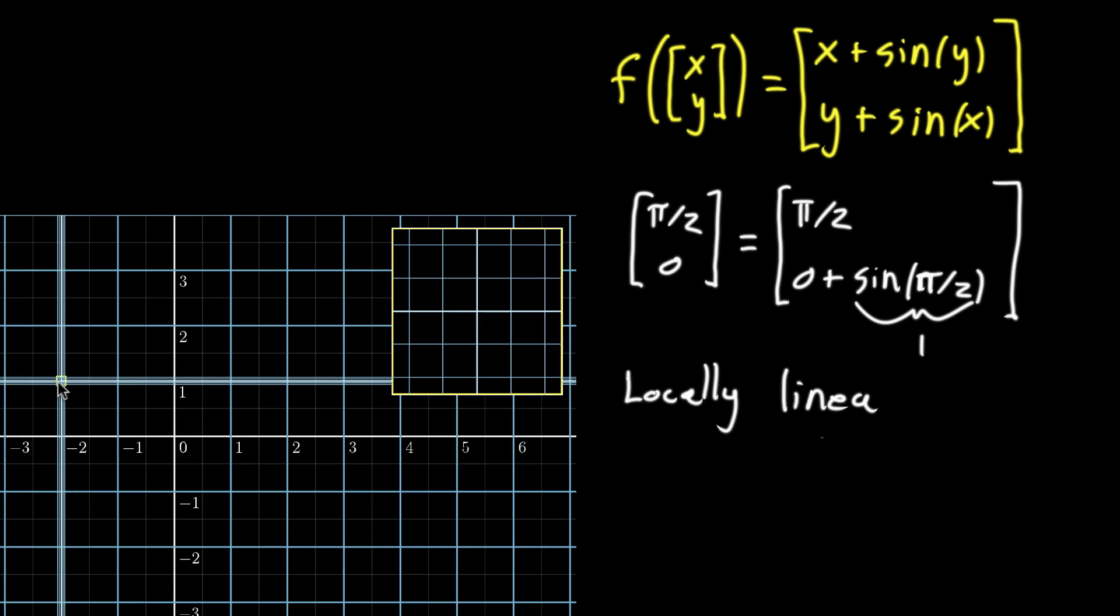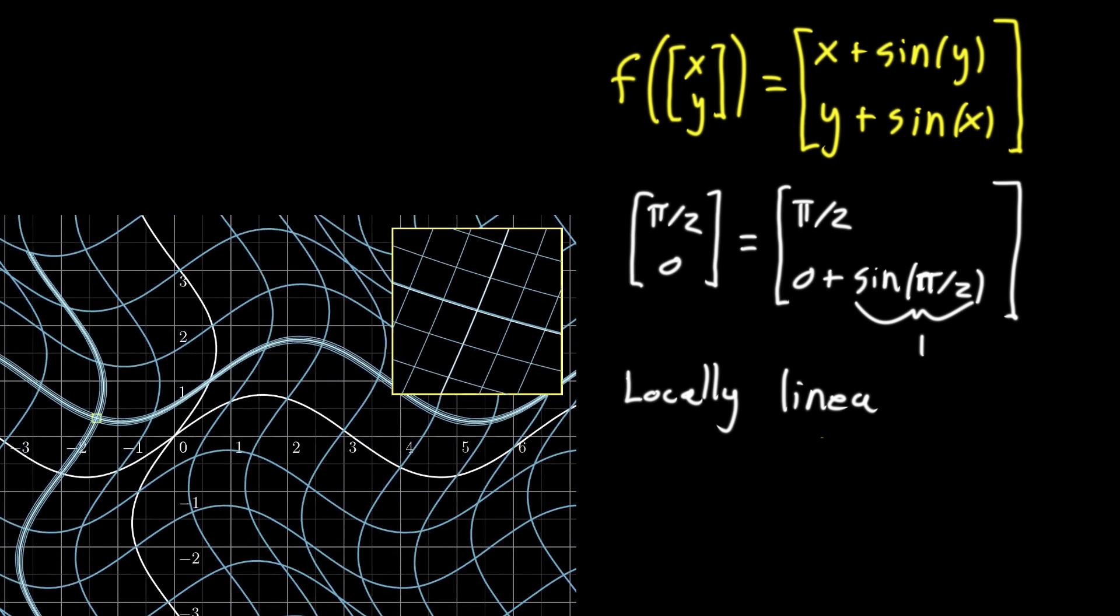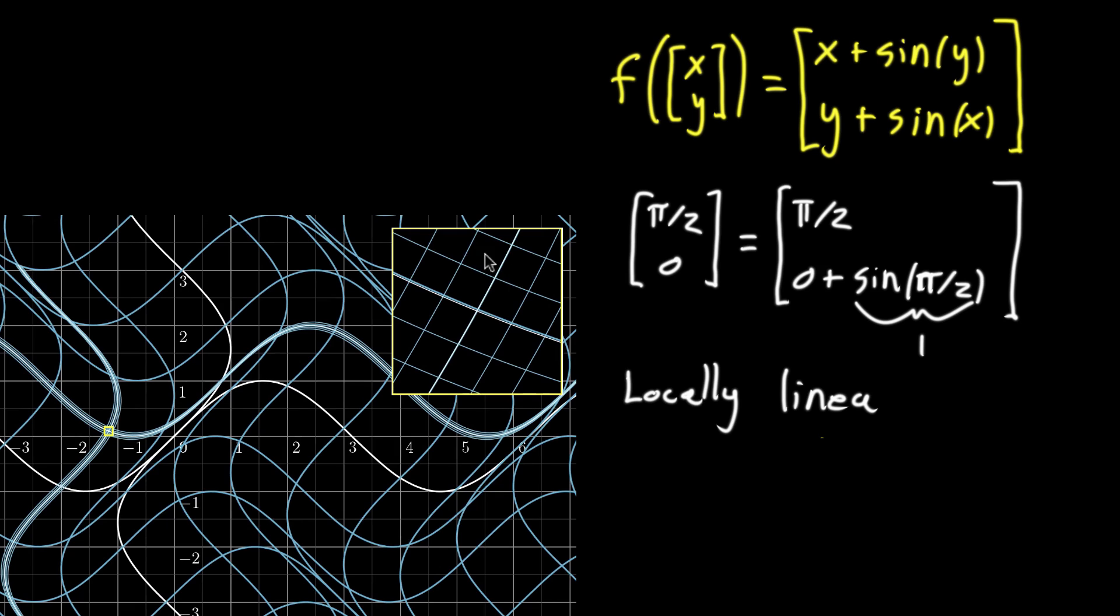So this time when I play it and that zooming in box kind of tracks the point that we're looking at, as it goes, the neighborhood around it, all of the points around it really, really do look like a linear function. And the more you zoom in, the more it looks precisely like a certain linear function.